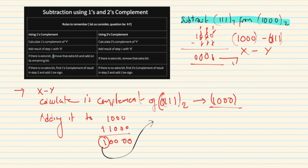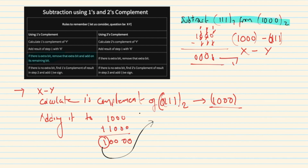Since there is an extra bit, remove that extra bit and add it to the remaining bits. The remaining bits are 0 0 0, plus the extra bit 1. So 0 0 0 plus 1 equals 0 0 0 1. That is the answer: 0 0 0 1, which equals 1.